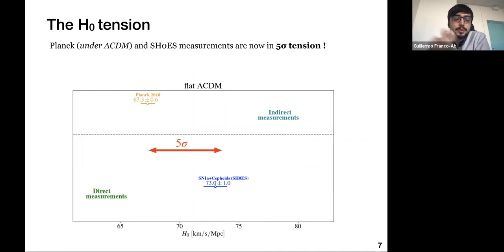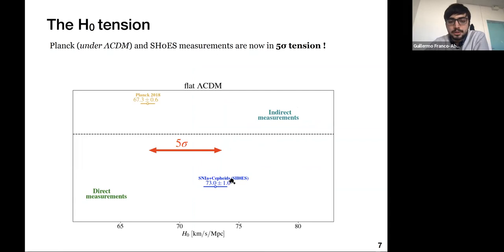It turns out that the direct determination of S8 by several weak lensing surveys is always two to three sigma smaller than the value inferred by the Planck satellite assuming Lambda CDM. Now let me describe the Hubble tension — the discrepancy in the determination of the Hubble constant between the value inferred by Planck assuming Lambda CDM and the one directly measured by the SH0ES collaboration, which uses a cosmic distance ladder method calibrating distances to supernovae using Cepheid variables.